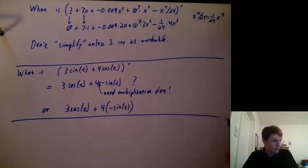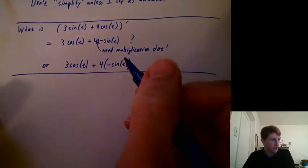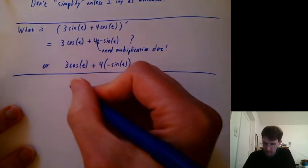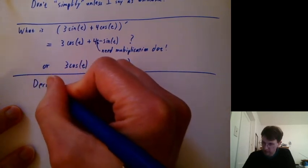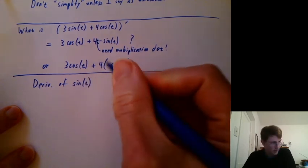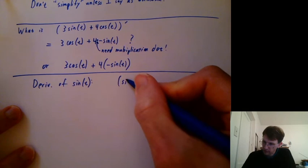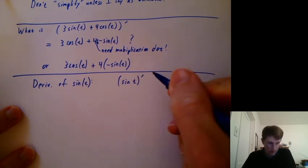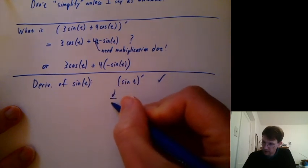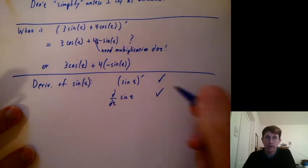Alright. One last thing to mention. What are the various ways in notation we can say what's the derivative of sine of t? So we can say what's the derivative of sine of t? So you could put sine t in parentheses and do prime on it. That's good. You could say d/dt sine t. That's good.